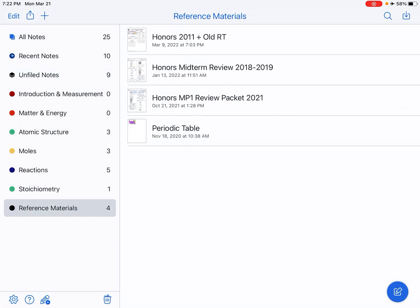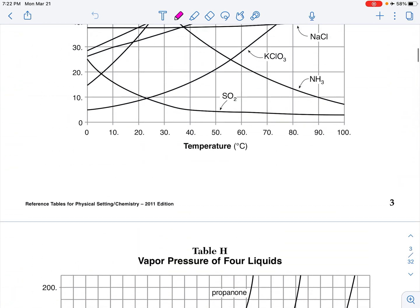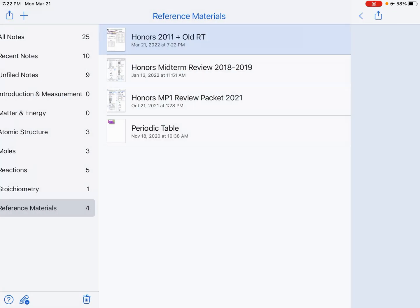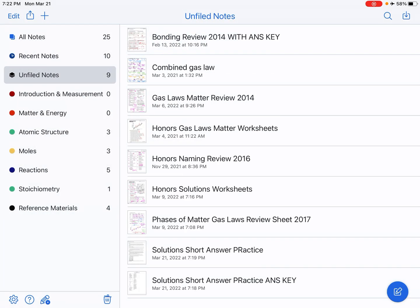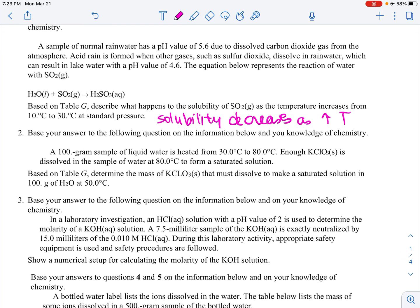Okay, so let's go to our reference table, Table G. And SO2, it's right here at the bottom, from 10 to 30. Solubility, so the solubility decreases, okay? And it doesn't ask us, the question does not ask us for any numbers, so we can just say the solubility decreases. Solubility decreases as temperature increases. Good enough! You don't want to write too much.